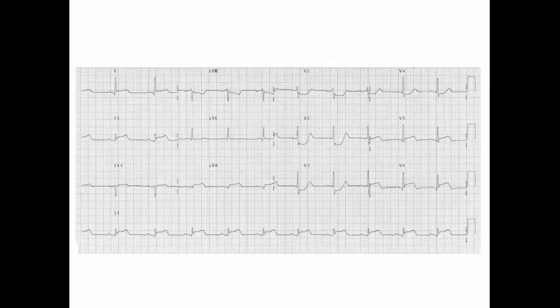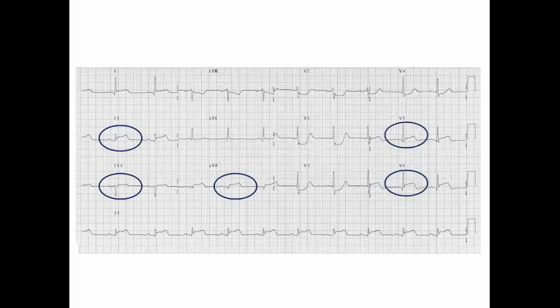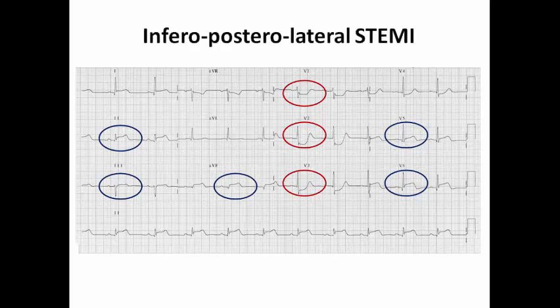Here is an example: we can see ST elevation in the inferior leads — inferior STEMI; ST elevation in V5 and V6 — lateral STEMI; and ST depression in V1, V2, V3, and V4 with tall R waves in V2, V3, and V4. So this is inferoposterolateral STEMI — inferior STEMI plus lateral STEMI plus posterior STEMI as proved by the right precordial leads. The posterior ECG leads with V4, V5, V6 placed on the back, now called V7, V8, V9, show ST elevation confirming posterior STEMI together with the inferior STEMI.